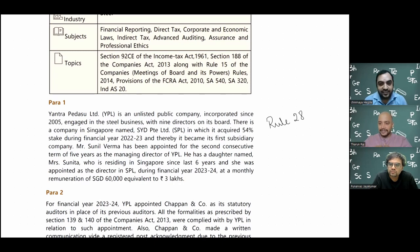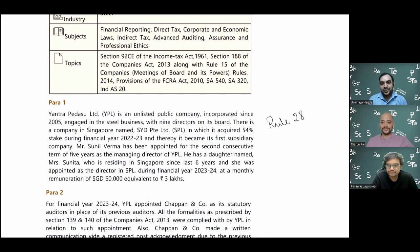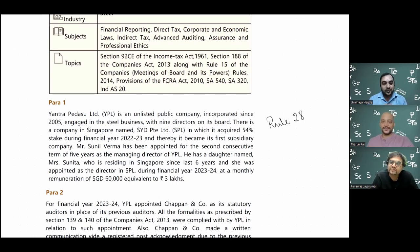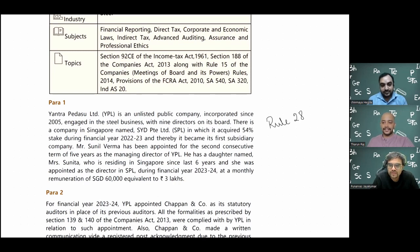In FR also, there are quite a few related party implications. The exam is an open book exam. In direct taxes, this would be called an associated enterprise for transfer pricing norms - here you have an Indian company and a foreign associated entity. For transfer pricing, they are called associated enterprises. In FR, associate means something different; in company law, associate also means different - more than 20 percent voting power.